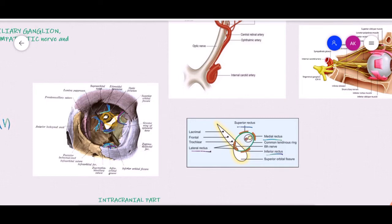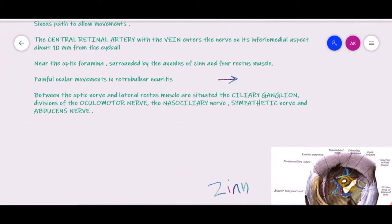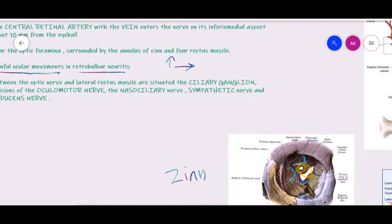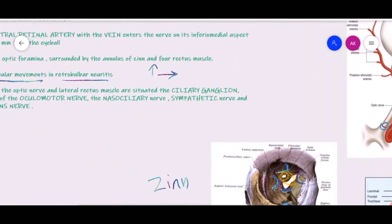Whenever there is inflammation of the intraorbital part of the optic nerve — that is retrobulbar neuritis — these muscles will also get inflamed. As a result, when the patient tries to look towards the left or right side, especially with horizontal movements and when looking upward, there will be pain. This explains why there are painful ocular movements in retrobulbar neuritis — due to the involvement of the superior rectus and medial rectus in close relation to the optic nerve at the annulus of Zinn.